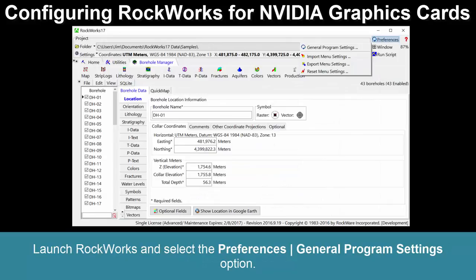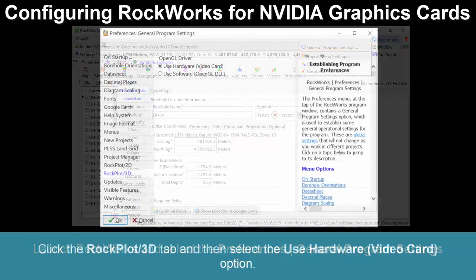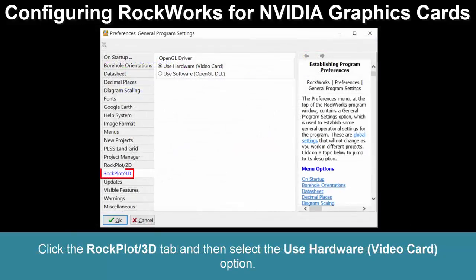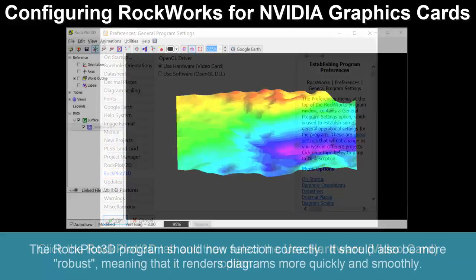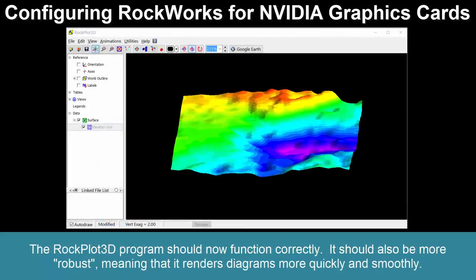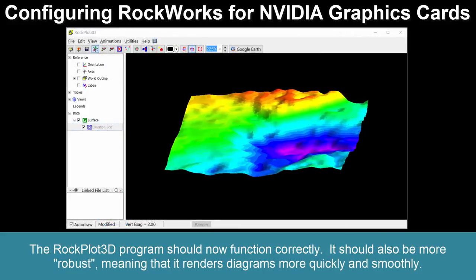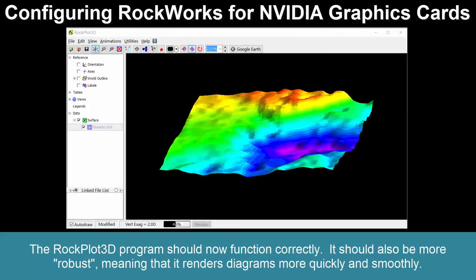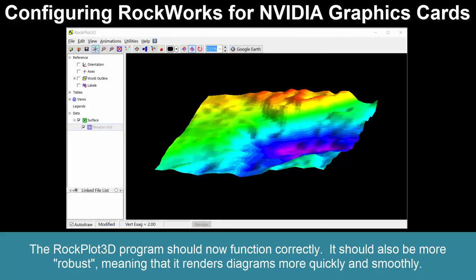Launch Rockworks and select the Preferences General Program Settings option. Click the Rockplot 3D tab and then select the Use Hardware Video Card option. The Rockplot 3D program should now function correctly.